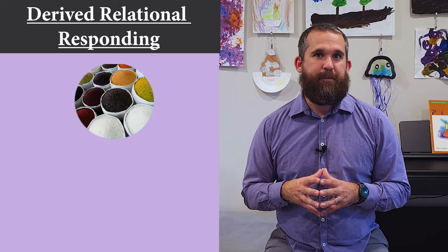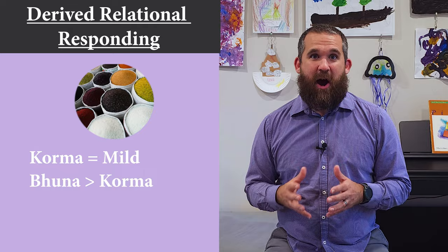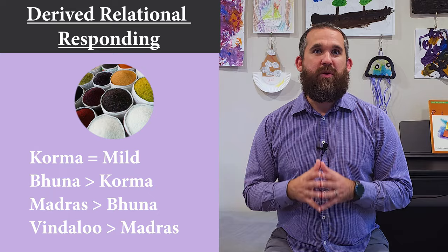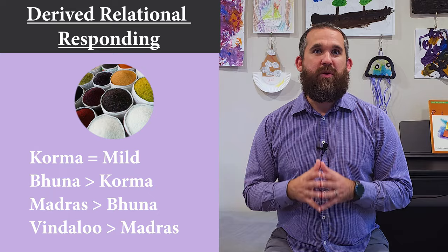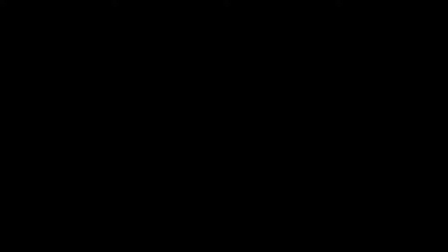In everyday life, we often make connections between different things without needing special training. ACT calls this derived relational responding, and this is how it works. Imagine you're in an Indian restaurant and you want to know how spicy the curries are. The waiter explains that korma is mild, a buna is hotter than a korma, a madras is hotter than a buna, and a vindaloo is hotter than a madras. Even though these curries were never directly compared, you instantly know that a vindaloo is hotter than a korma and a buna — you naturally respond to a relationship between different things without being taught.